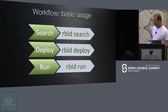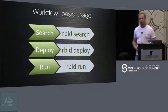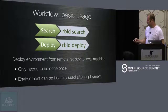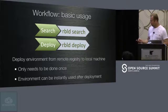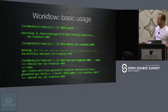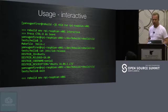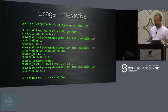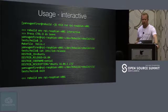Now let's talk about workflows — how you work with your build environments. The basic usage, as we saw in the demo, is: search for the environment you want, find it, deploy it, and then run. The deploy step only needs to be done once for each version. We already saw this in the demo — search, deploy, and immediately use it. We also already showed the interactive usage of the build environment: you don't need to execute one command after another; you can enter your build environment and execute commands inside it.